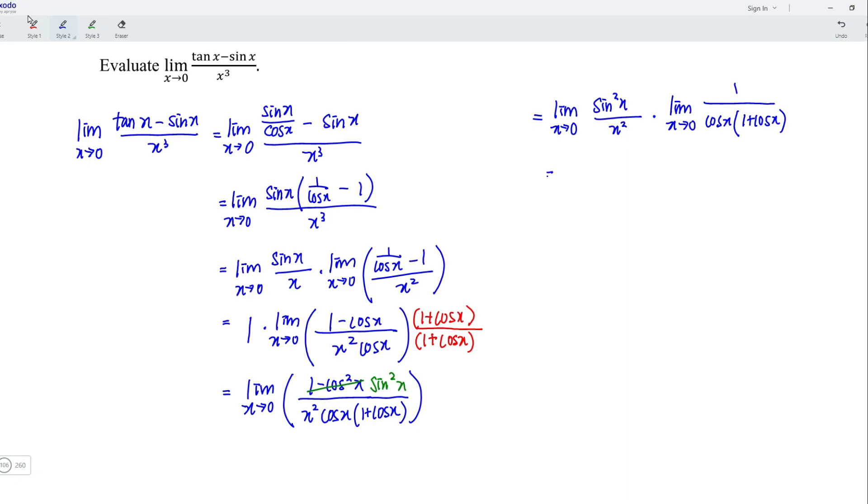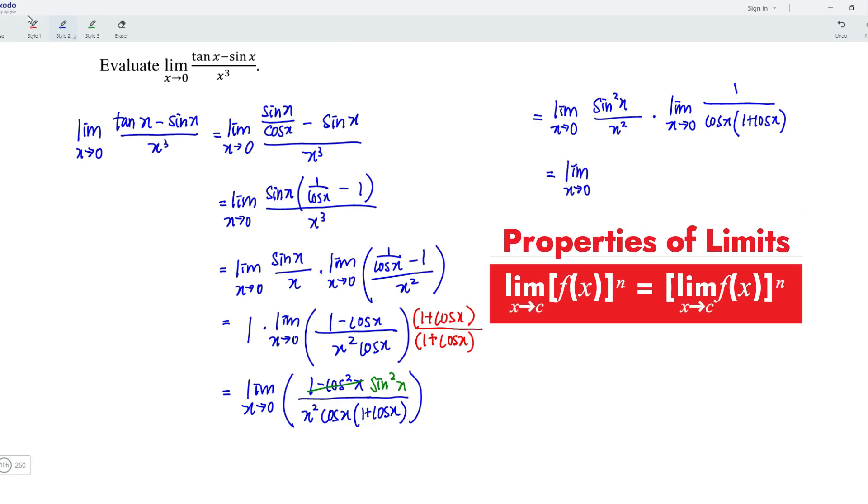Next, I'm going to rewrite the limit by using properties of a limit. Recall that the limit of the square of the function is simply equal to the square of the limit of the function.